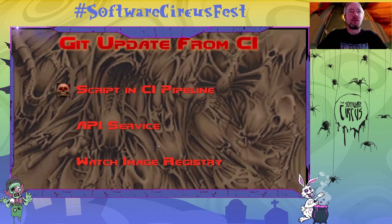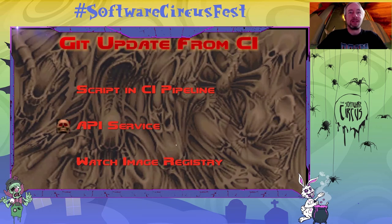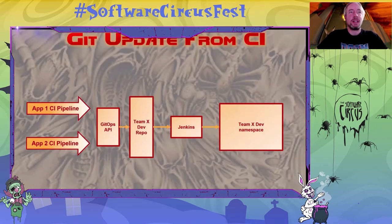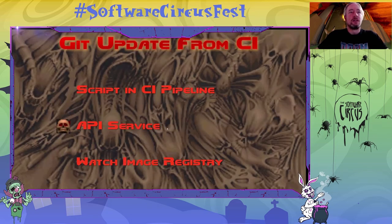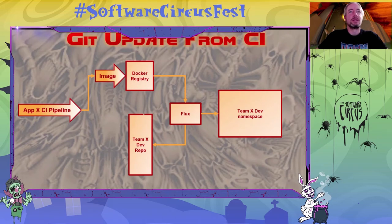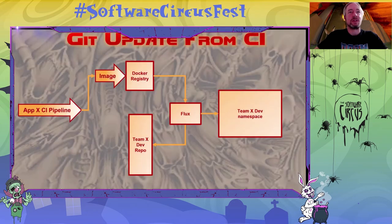That's our problem: how to implement pushing YAML files to Git programmatically. First, we can implement this as a simple script at the end of the pipeline. Second, we could implement an API service and put that in front of Git to queue any changes coming from the CI pipeline, so the CI pipelines have a nice API to use and any changes going to Git would be queued so there are no conflicts. Sometimes we could even use the Git server's API to do this when we're just updating a simple file.